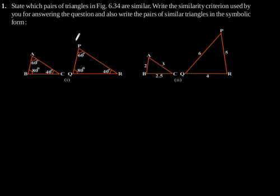Exercise 6.3, question number 1: state which pair of triangles in figure 6.34 are similar. Write the similarity criterion used and also write the pair of similar triangles in symbolic form.